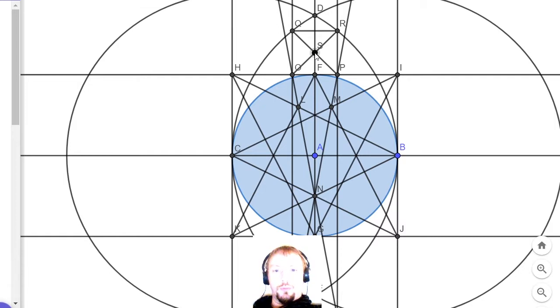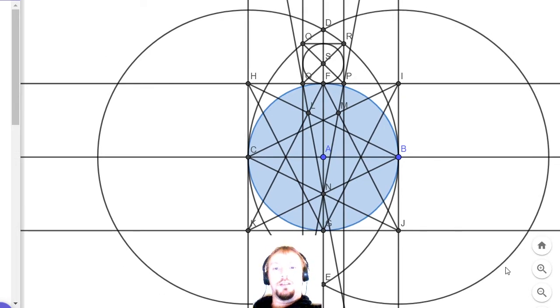We now make a circle with the center point S running through F. Dink. And there's the moon. And that's it.